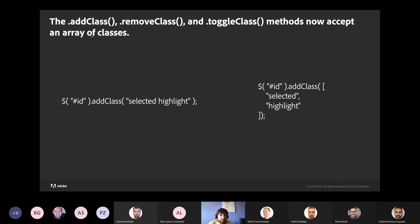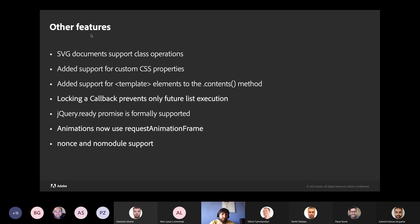Another coding improvement is the ability to add, remove, and toggle classes using an array. Previously you had to specify classes as a string; now you can pass arrays to these methods. There are other features as well — jQuery ready is now a proper Promise, there are improvements on animations, module support where parameters were previously ignored, and lots of others as you can see on this page, and probably that's not even the full list.